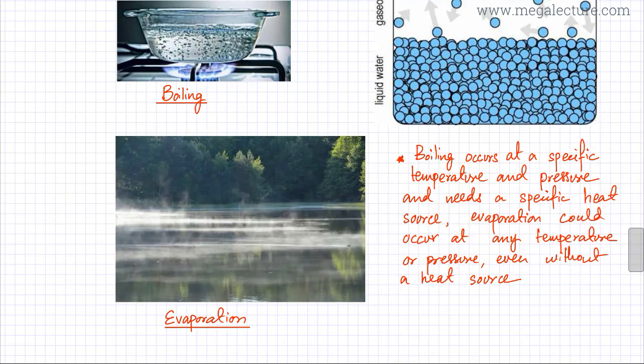The second difference between boiling and evaporation is that boiling occurs at a very specific temperature and pressure. For example, water boils at 100 degrees centigrade. There's a specific temperature at which boiling occurs and it also needs a specific heat source. You can see this image. Without this heat source, it's a burner at the bottom of the container, this boiling is not possible. It needs a specific heat source.